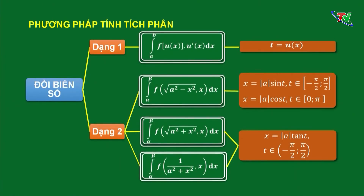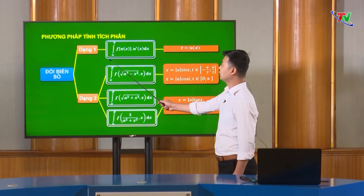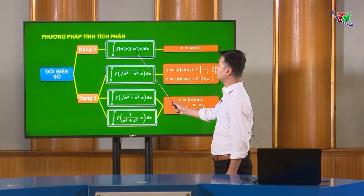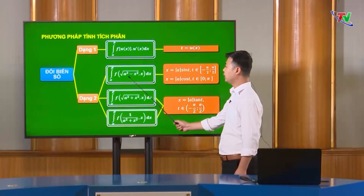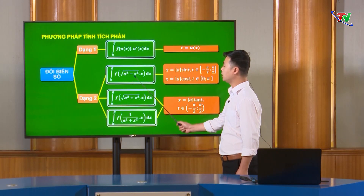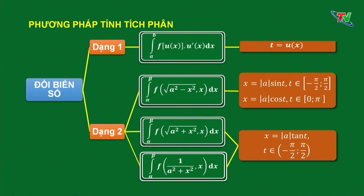Về các phương pháp tính tích phân, chúng ta thường dùng 2 phương pháp chính. Thứ nhất là phương pháp đổi biến số. Thầy đã phân thành 2 dạng thường gặp nhất. Dạng thứ nhất, khi gặp 2 biểu thức u(x) và u'(x) dưới dấu tích phân thì ta thường đặt t bằng u(x). Dạng số 2, thầy chia làm 3 trường hợp cụ thể. Dạng thứ nhất, khi gặp biểu thức có dạng √(a² - x²) thì ta đặt x bằng a·sin(t) với t thuộc đoạn từ -π/2 đến π/2, hoặc đặt x bằng a·cos(t) với t thuộc đoạn từ 0 đến π.